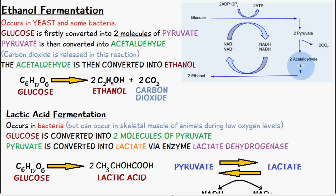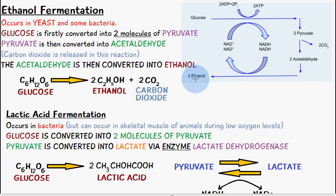From here, pyruvate is converted into acetaldehyde. You can see carbon dioxide is removed, and then acetaldehyde is converted into ethanol. During this process, NADH is converted back into NAD+.